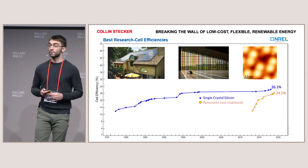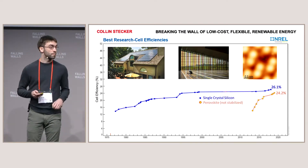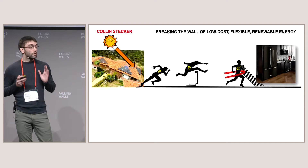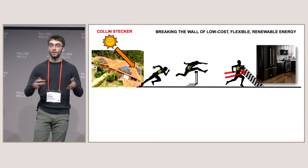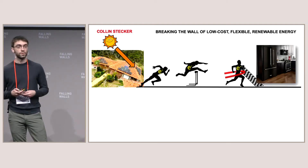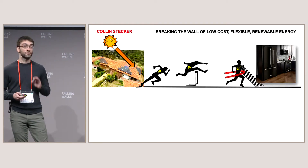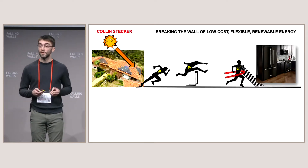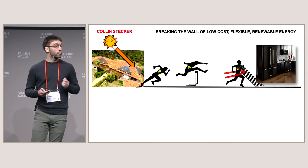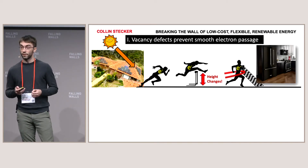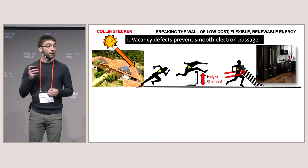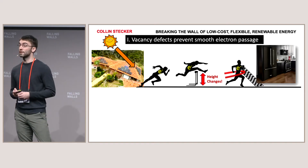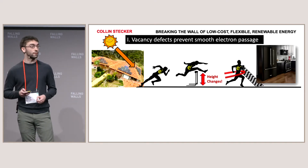My work showed two important consequences of vacancy defects. When sunlight enters a solar panel, it gives its energy to an electron, freeing it to run to the external circuit and power your household appliances. However, there's a barrier along the way that can prevent the electron from reaching the finish line. My work found that the presence of vacancy defects actually changes the height of this barrier, and the larger the group of vacancies, the more the barrier height changes. Understanding how this barrier height changes is crucial for engineering more efficient devices.